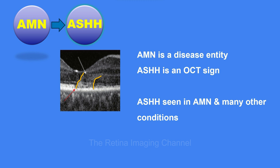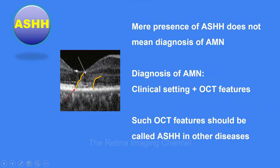The key point is that AMN is a disease, whereas ASHH is merely an OCT sign. A similar OCT sign of ASHH is seen in many other diseases, and in those cases we should call it ASHH and not AMN. The mere presence of the sign ASHH on OCT does not mean a diagnosis of the disease AMN. Diagnosis of AMN requires the appropriate clinical setting along with the OCT signs. Wherever we see an OCT sign like AMN without the clinical setting of AMN, we term it as ASHH.